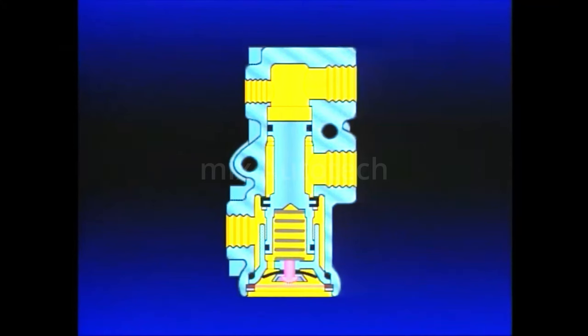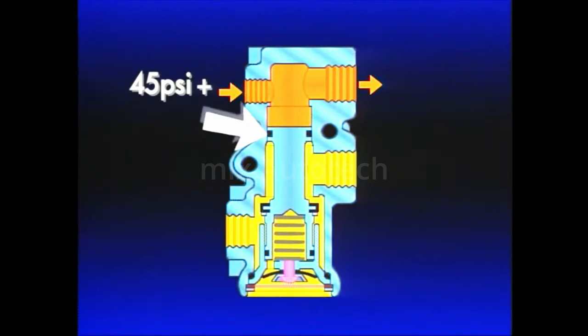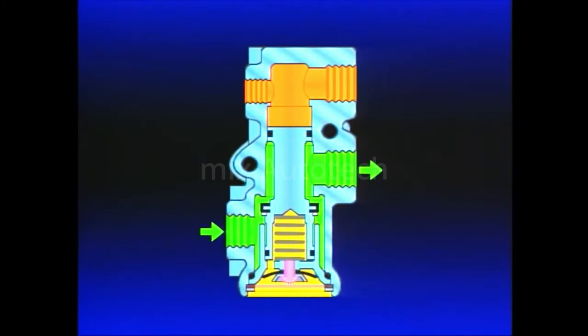Air exerts a force on the plunger as it flows through the TP3 from the tractor supply to the trailer supply port on its way to the trailer air system. When air pressure on the plunger exceeds approximately 45 PSI, the plunger moves, opening the service inlet valve. With the service valve open, brake application pressure is free to flow from the tractor to the trailer brake system.